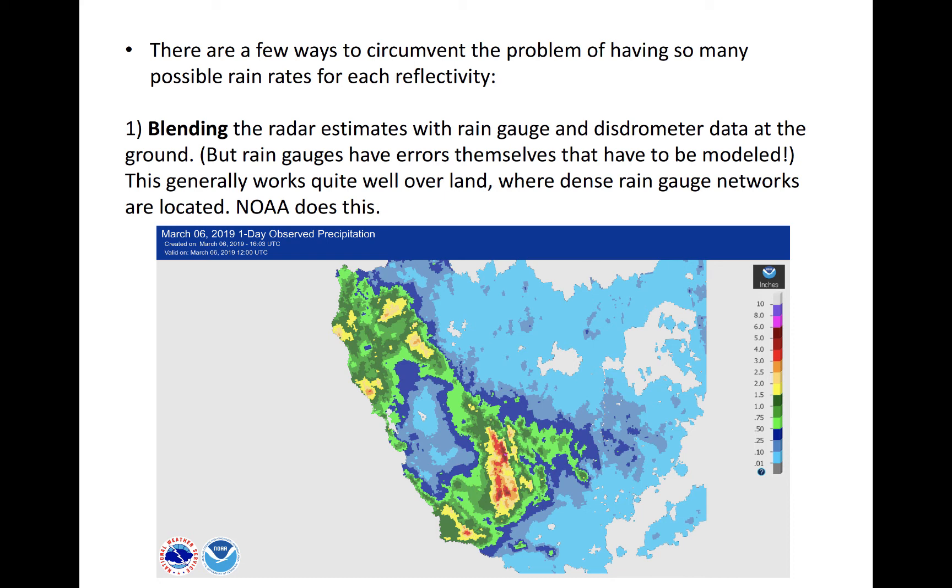This works quite well in places where you have ground-based data. Shown here is an example of one-day observed rainfall product from NOAA over the southwestern United States. That is an example of a product derived using such a blended technique.